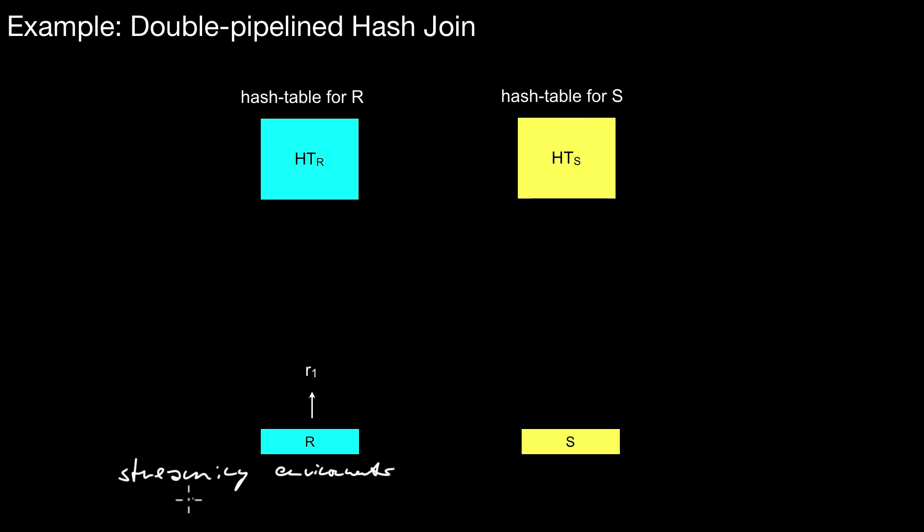For example, sensor data. A simple example would be a temperature sensor measuring the temperature every minute and it would send the tuple and maybe join it against something else. In such a scenario, there is no end to the stream.